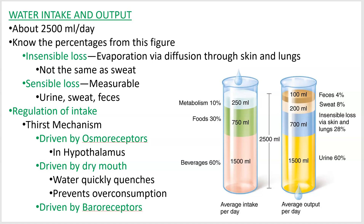Here we go, video two of fluids and electrolytes for 2402 lecture. Let's talk about water intake and output. These two values are equal unless you're becoming more dehydrated or over-hydrated over the course of a day, but generally it's about 2,500 mLs a day — 2.5 liters, maybe two-thirds of a gallon.